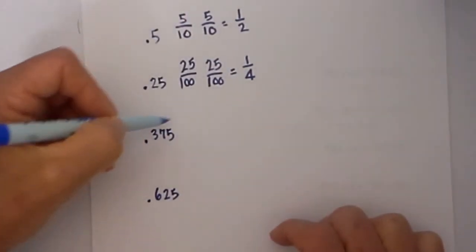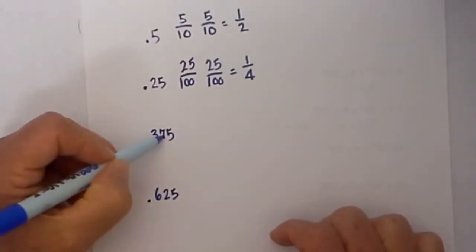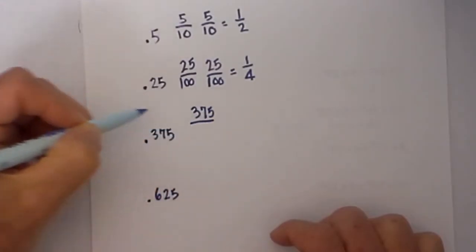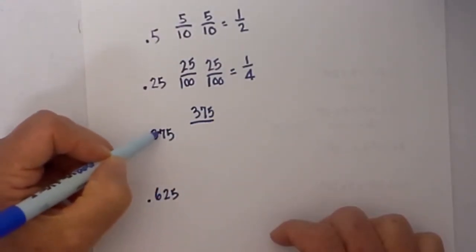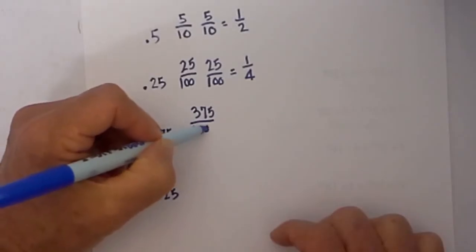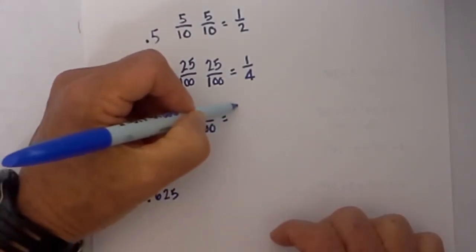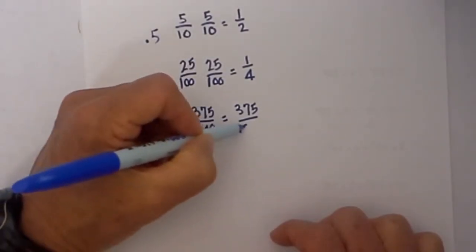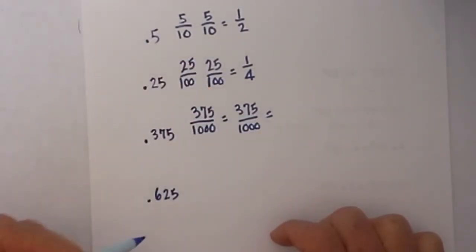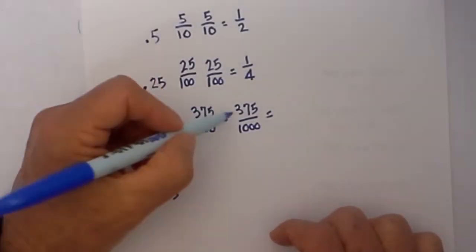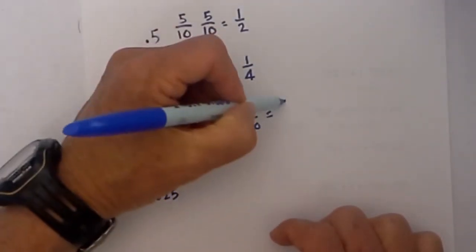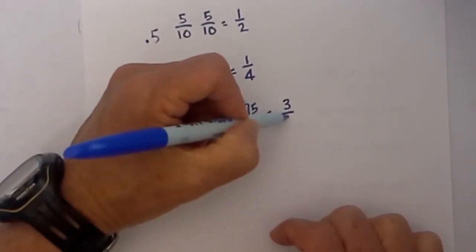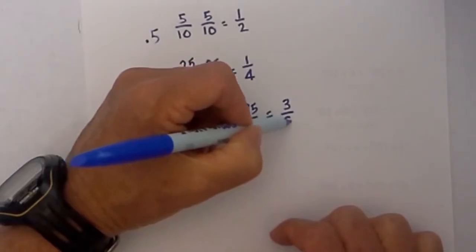Let's keep going. The number to the right of the decimal is 375. Place that over tens, hundreds, thousands. Or I can write one and then three zeros. Then I know that 125 goes into 375 three times and 125 goes into a thousand, let's see, eight times. So 0.375 simplified becomes three eighths.